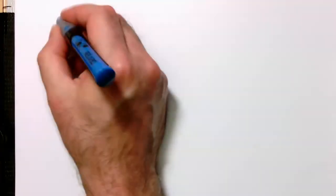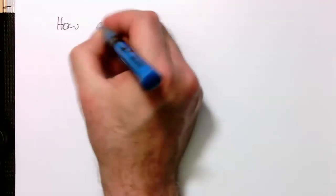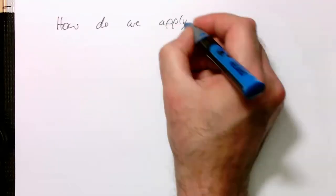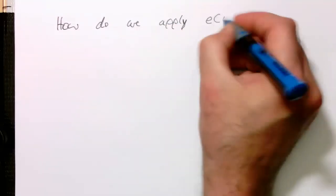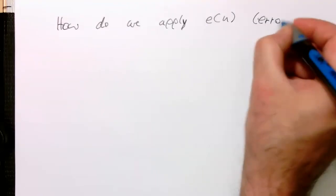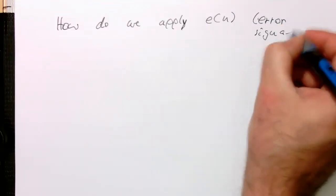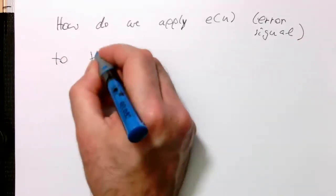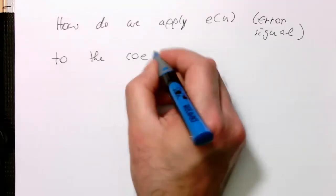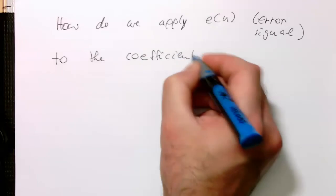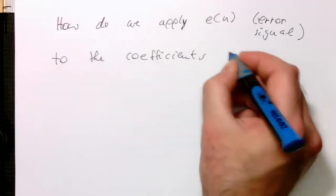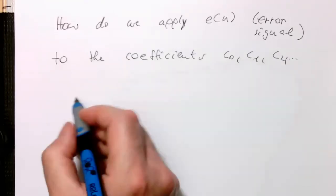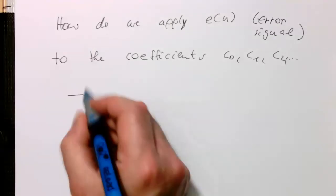So how is now, how do we apply E of N, so our error signal, our error signal to the coefficients, C0, C1, C2. And that's quite a simple idea how this is done. And this relates essentially to neural network theory.